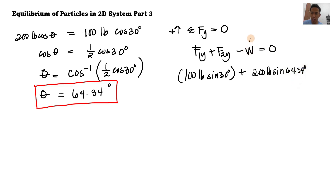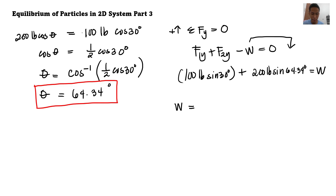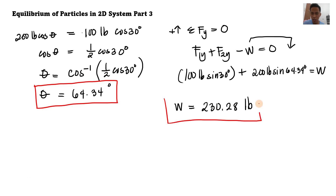Transposing W to the right side: W equals F1y plus F2y. Input directly into the calculator: 200 sine 64.34 degrees plus 100 sine 30 degrees gives W equals 230.28 pounds. So 230.28 pounds is the required weight and 64.34 degrees is the required angle for equilibrium. That's how you solve equilibrium of particles in a two-dimensional system.